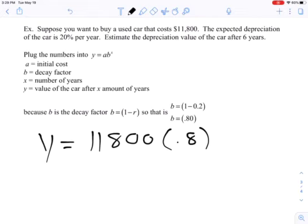Now we're talking how many years? Six years. So now we punch that into our calculator: 0.8 to the sixth power, and then times 11,800, and we get $3,093.30. About $3,093.30 cash money.